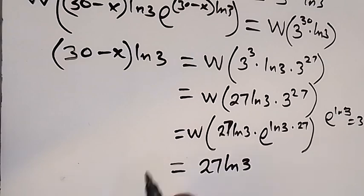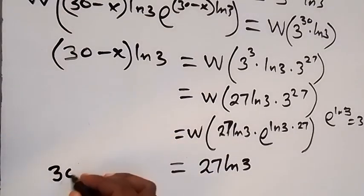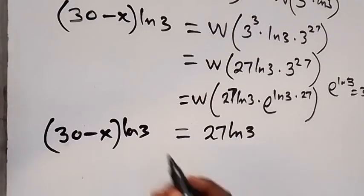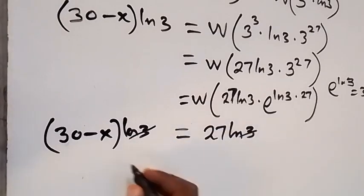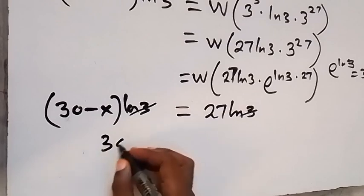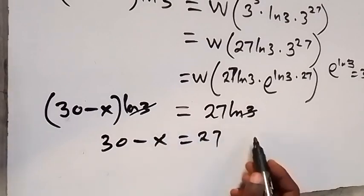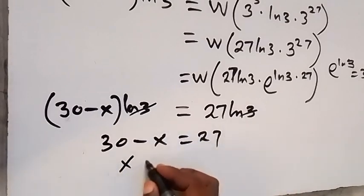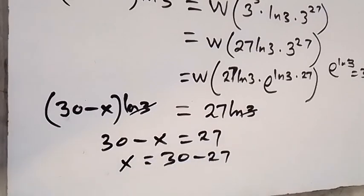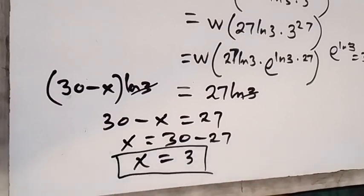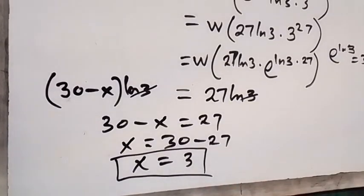We now equate: 30 minus x times ln 3 equals 27 ln 3. The ln 3 cancels on both sides, leaving 30 minus x equals 27. Solving for x: x equals 30 minus 27, so x equals 3. This is the value of x for this problem. Thank you for watching, please subscribe to this channel, turn the notification bell on, and share this video.